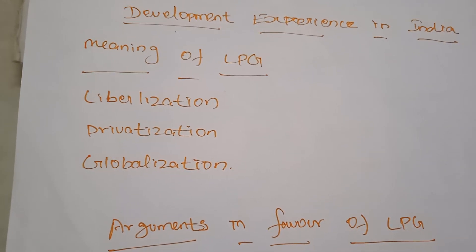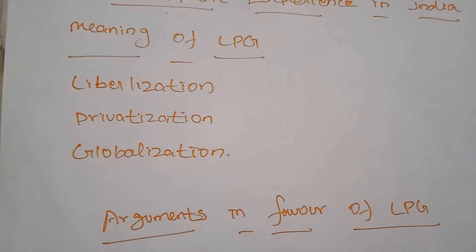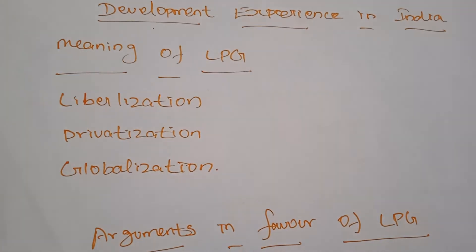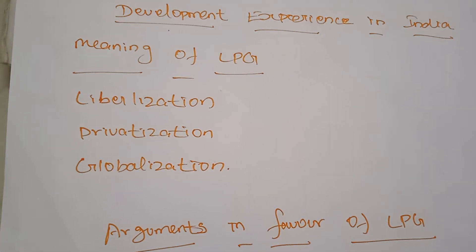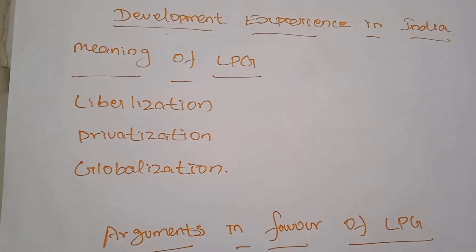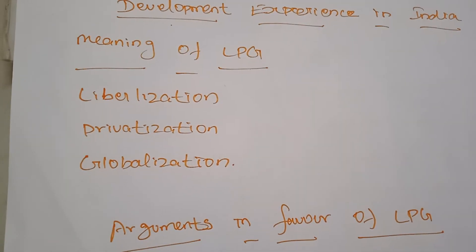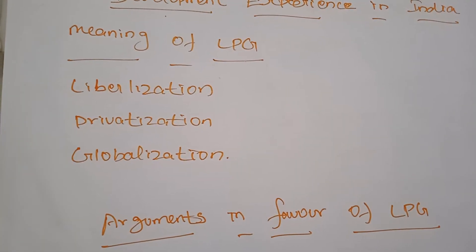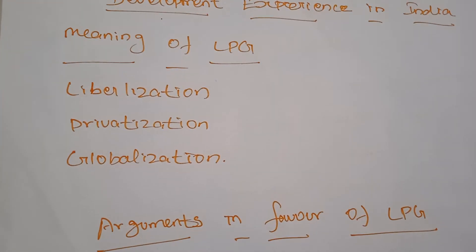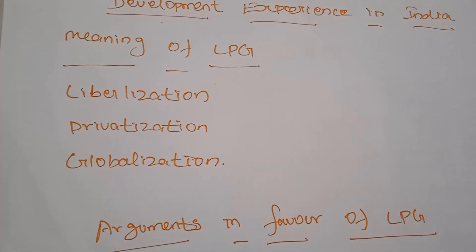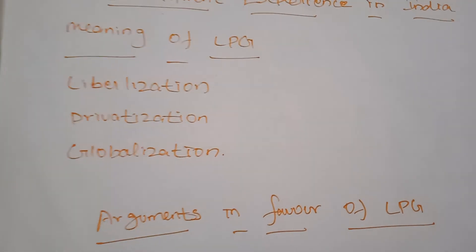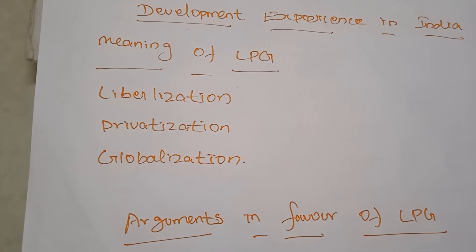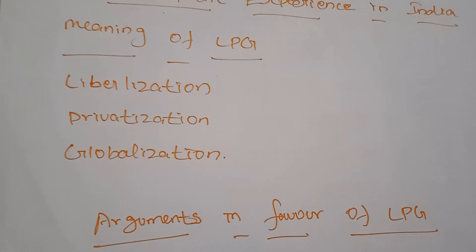In the eighth five-year plan, top priority was given to the development of human resources. The government decided to increase infrastructure and educational facilities and extend the number of colleges. The ninth five-year plan's main objective was growth with justice and equity, ensuring all people receive good justice at an equal level. The tenth five-year plan aimed to double the per capita income of India in the next 10 years.